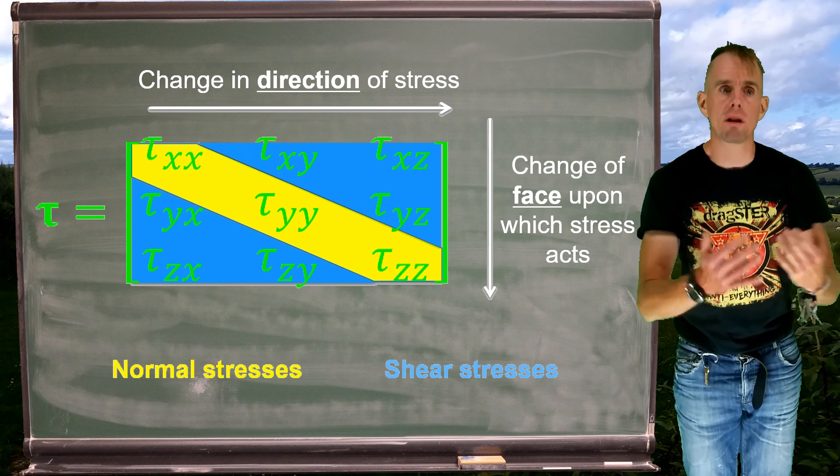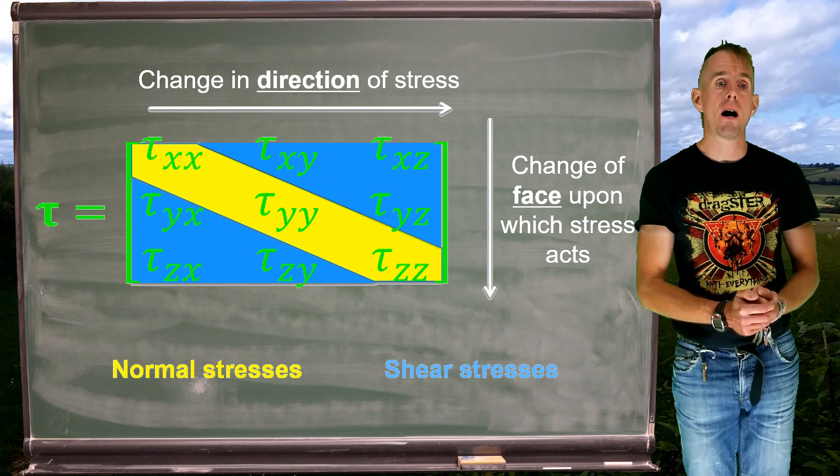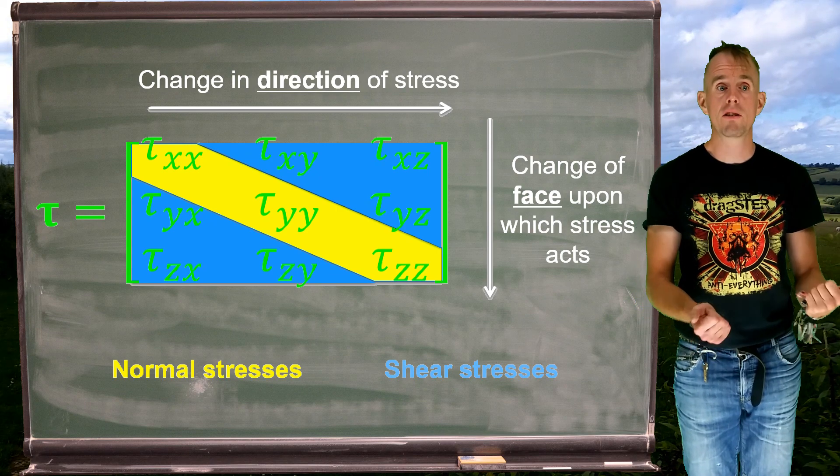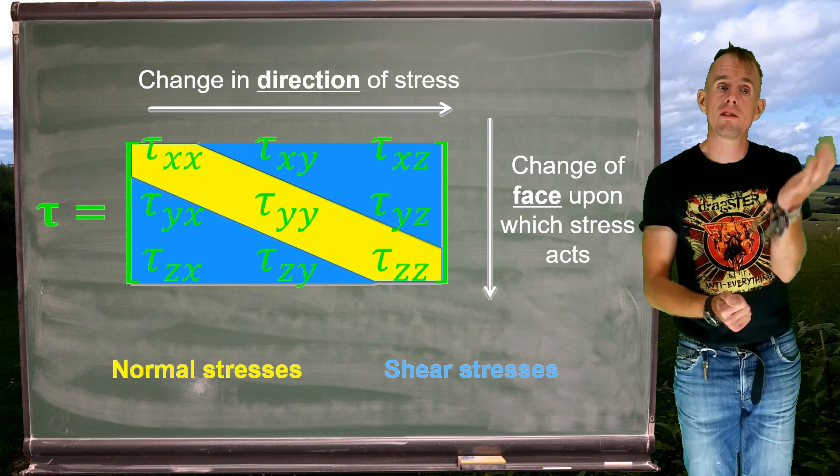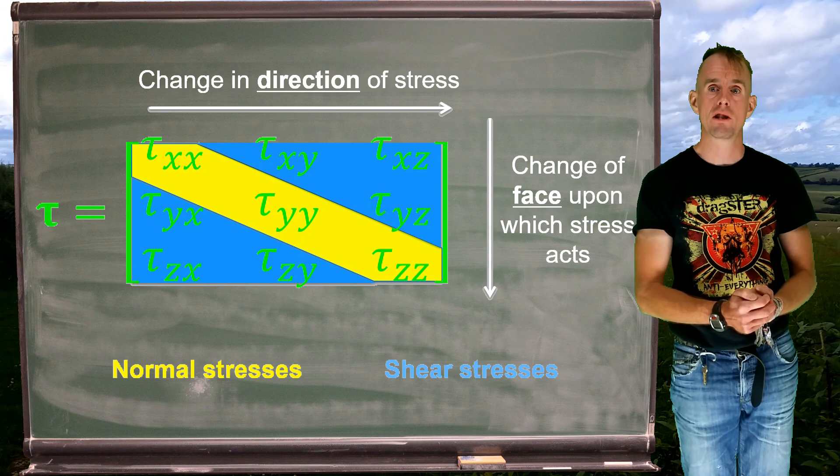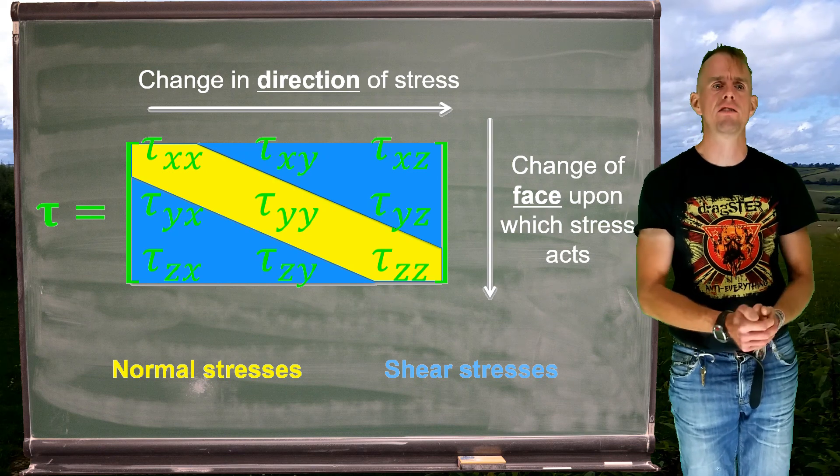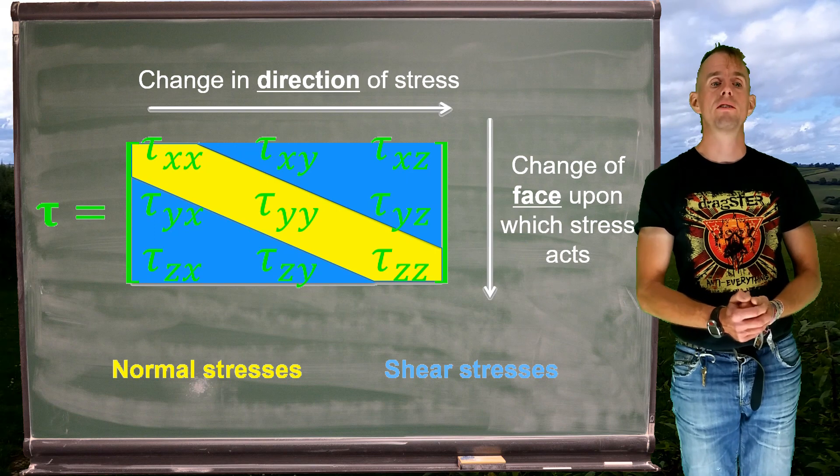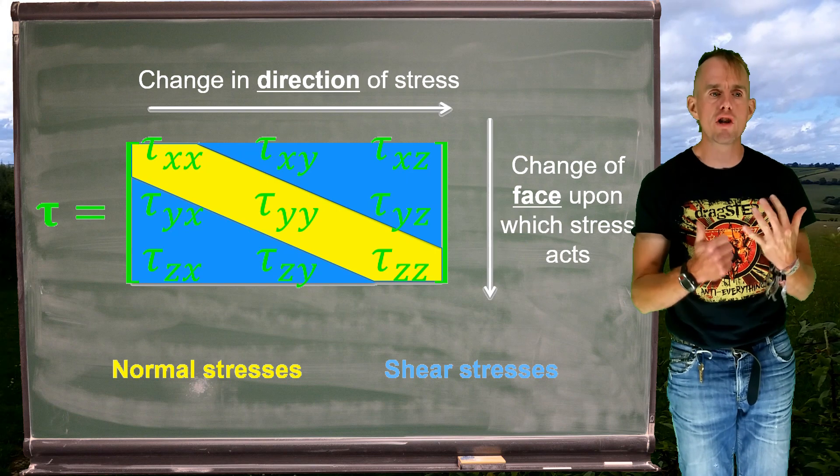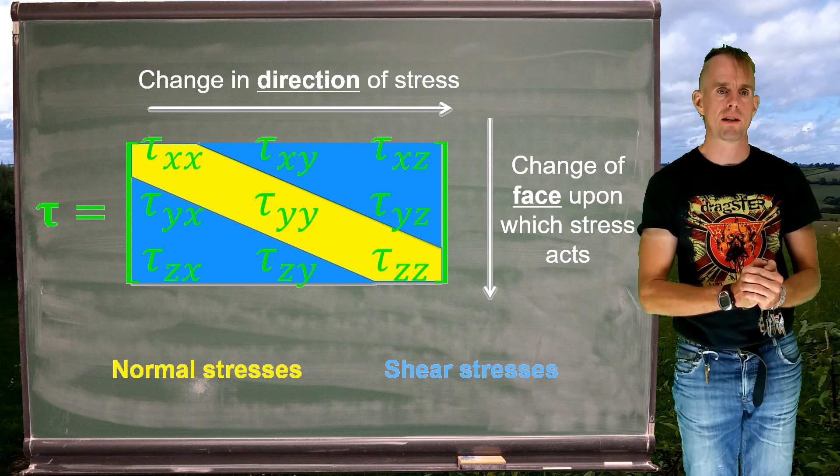Stresses that do not lie on the principal diagonal are shear stresses, and we can see these on tau_xy, tau_xz, and tau_yz in the upper triangular section of that matrix. And in the lower triangular section, we have tau_yx, tau_zy, and tau_zx. So there are our nine stresses in our stress tensor.